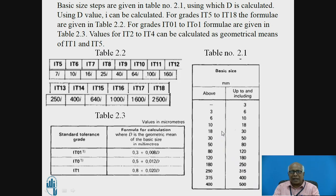So it lies between 10 to 18, this class. So for this basic size, the two limits are one is the 10, another is 18. So that capital D value will be calculated as square root of this 10 multiplied by 18.